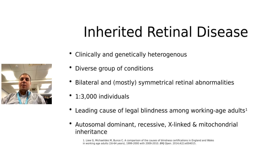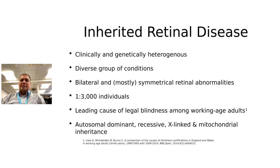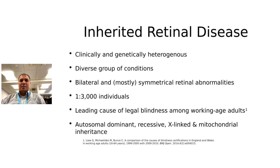When we think of inherited retinal diseases, this is a big umbrella term. These diseases are heterogeneous in nature, meaning they vary in age of onset, symptoms, and the genetic mutations we find. They have a different course as well — not only the age of onset, but also the progression of the disease. Mostly, they are symmetric abnormalities — bilateral, and in most cases symmetrical. You would expect that the same deficit on one eye will also appear in the other.